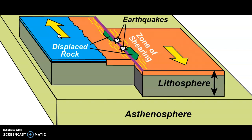Transform plate boundaries are also known as neutral or conservative plate boundaries. Why? There is no subduction taking place — that means no plate is going below the other. There is no divergence taking place — that means they are not moving away from each other. What they are simply doing is sliding past each other.